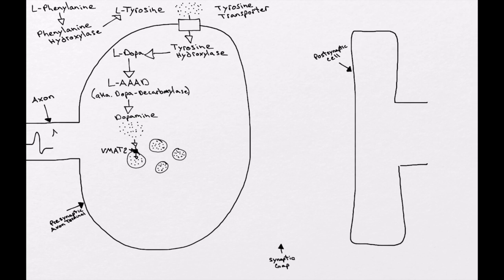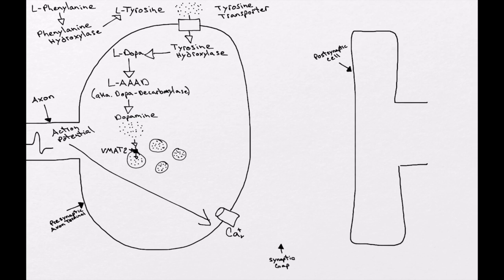Now with dopamine stored in vesicles, the next step is release. The body elicits a response and sends an action potential into the axon terminal. That action potential stimulates voltage-gated calcium channels on the plasma membrane of the presynaptic axon terminal to activate, causing an influx of calcium from the extracellular space into the cytoplasm. This causes the vesicles to fuse to the plasma membrane and exocytose, releasing dopamine into the synaptic gap.